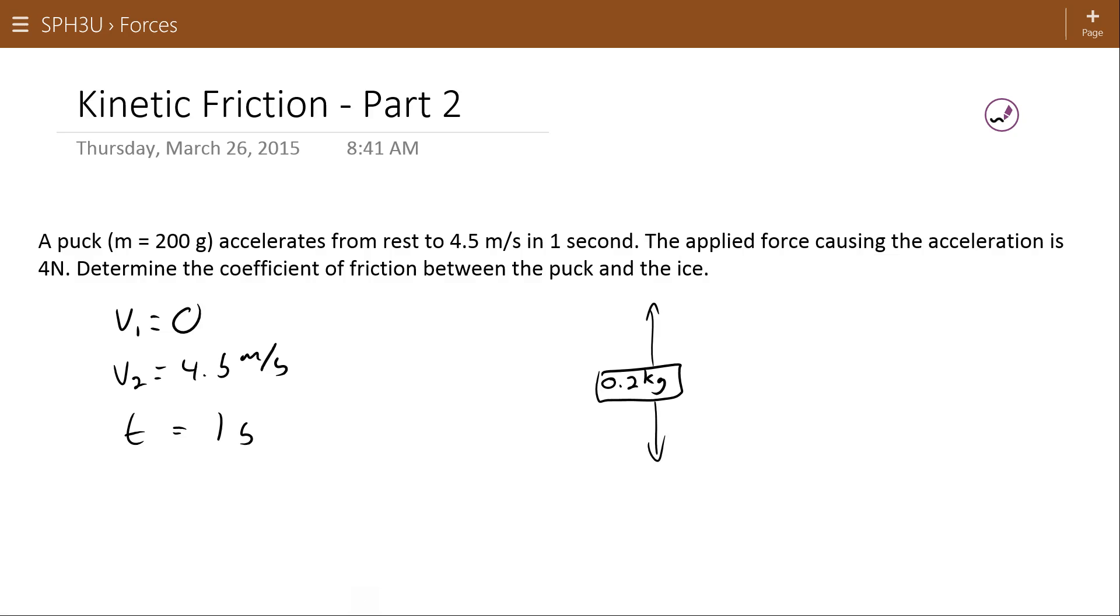We're going to assume the force of gravity and the normal force are equal and opposite. And where we usually ignore them, we're actually going to need them in this problem because we need to know what the normal force is. Force of gravity is equal to negative 9.8 newtons per kilogram times 0.2 kilograms or negative 1.96 newtons. It means the normal force is 1.96 newtons.